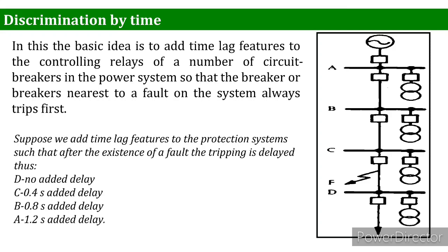The first method is discrimination by time. In this method, the basic idea is to add a time lag feature to the controlling relays of a number of circuit breakers in the power system. The reason is so that the breaker nearest to a fault on the system always trips first, as timing is very important in any protection system.